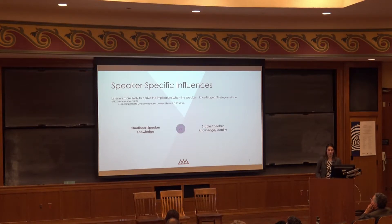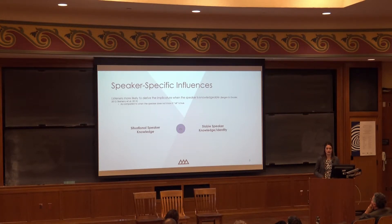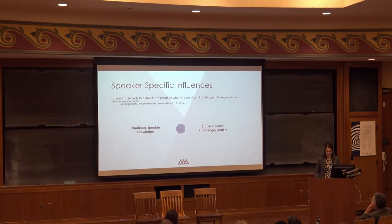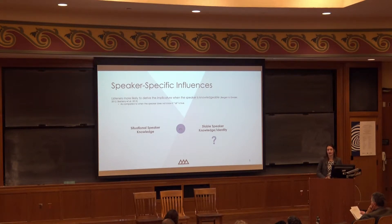This has been demonstrated across several studies that have manipulated what the speaker knows about the sentence the participant is responding to. I'll refer to this as situational speaker knowledge—what the speaker knows about that particular event being discussed. We can contrast this with what are called stable speaker knowledge or speaker identity, which could be something like what does the speaker know in general, or who are they? No one has looked at this type of influence on scalar implicature, and it's not a given that it functions the same way as situational speaker knowledge.